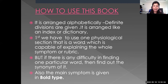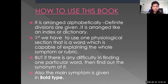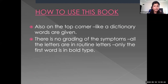Regarding how to use this repertory: as it is arranged alphabetically, defined divisions are given. It is arranged like an index or dictionary. First, we have to use one physiological section — that is, a word capable of explaining the whole symptom or rubric. If there is any difficulty finding one particular word, find out the synonym or rubric. The main symptom is given in bold type, making it easy to search the desired symptom. On the top corner of each page, like a dictionary, words are given. There is no grading of symptoms; all letters are given in routine type with only the first word in bold.